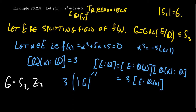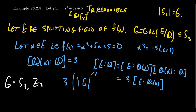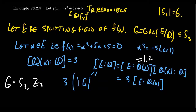It then comes down to deciding which of those two options you're in — are there three automorphisms or six? It depends on whether α generates the other conjugates. If α can generate all the other conjugates, then the Galois group is Z3. If there's a conjugate that doesn't belong in Q(α), we have to extend the field one more time. If [E:Q(α)] = 1, the Galois group is Z3; if it's 2, the Galois group is S3.